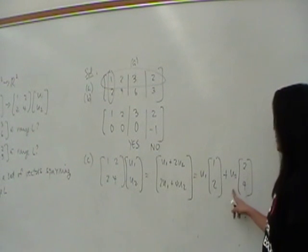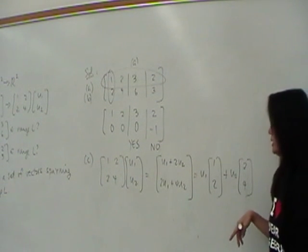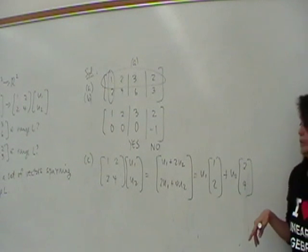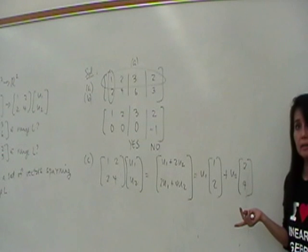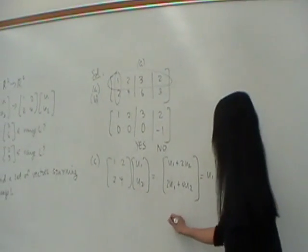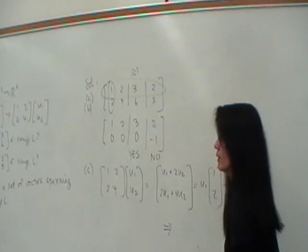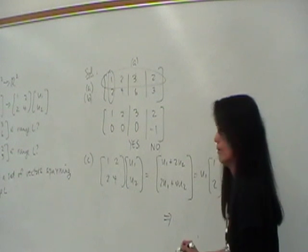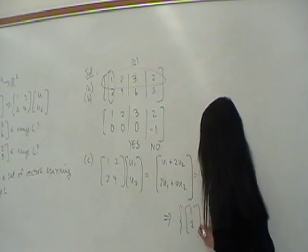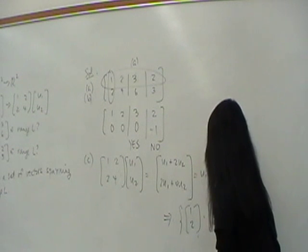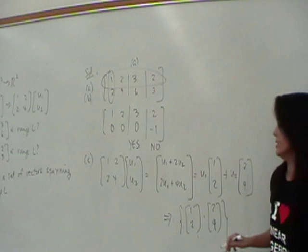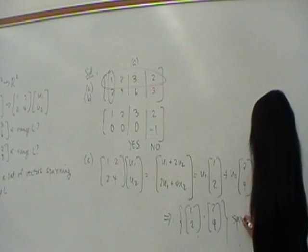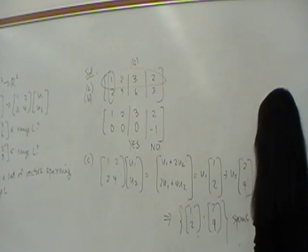That's the factor of the U1. You can write it as U1 times 1, 2. Because we want a spanning set, right? Plus factor out the U2, you'll have U2 times 2, 4. So right here you say, well, every answer in the range can be written as a linear combination of 1, 2 and 2, 4. Therefore, what is a spanning set for the range of L? 1, 2, 2, 4. Do you want to go further and think? No, it's the basis.